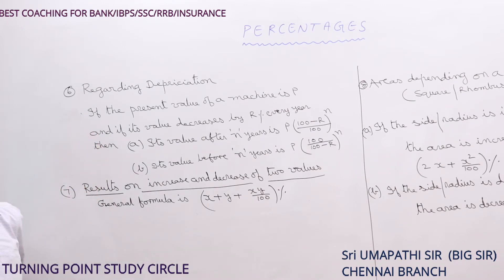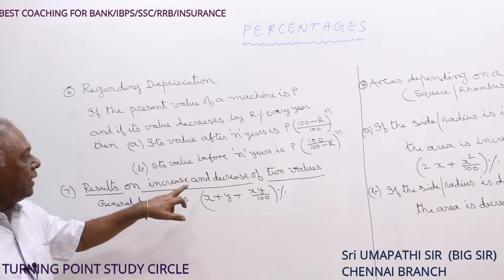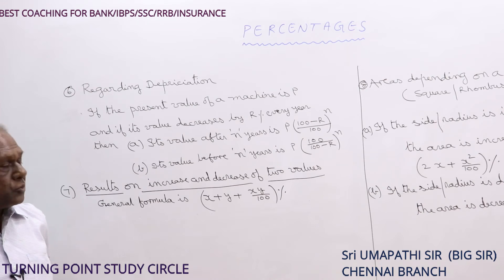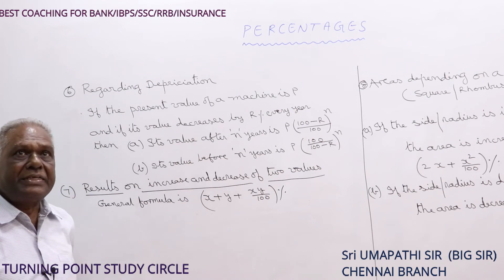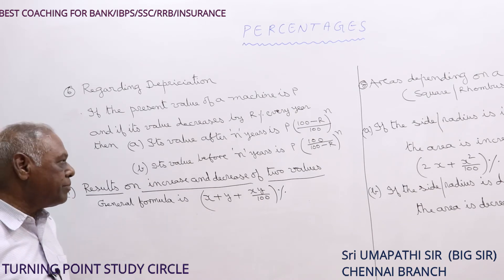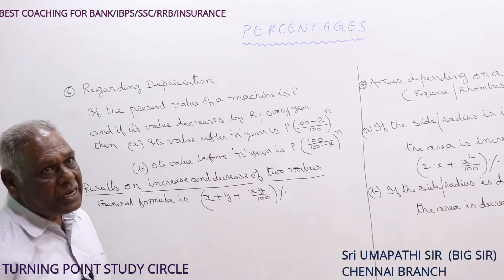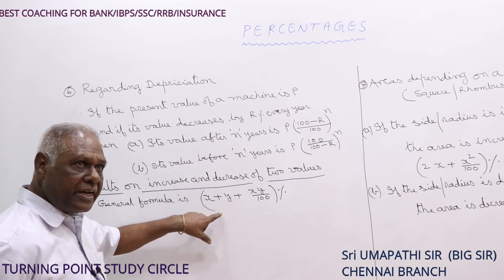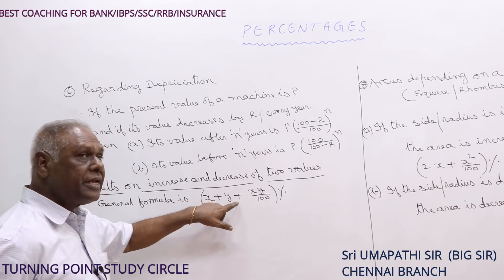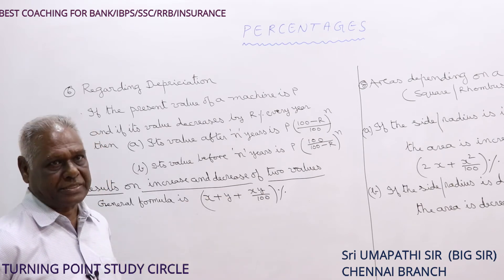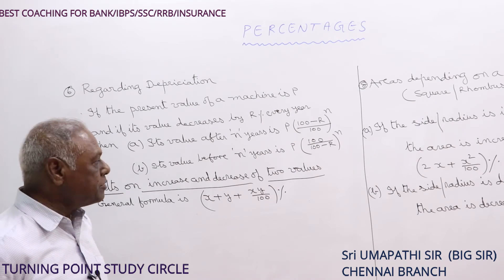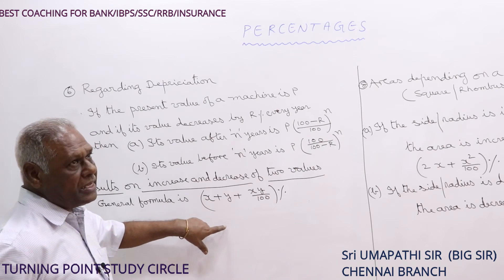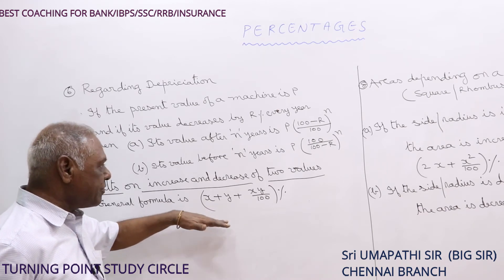Now, results on increase and decrease of two values. Suppose the length increases by X% and the breadth increases by Y%, then the general formula for the change in area is X + Y + XY/100 percent. If one is increasing and the other is decreasing, put the sign accordingly: X − Y − XY/100 percent. The increase or decrease is determined by the sign — positive means increasing, negative means decreasing.